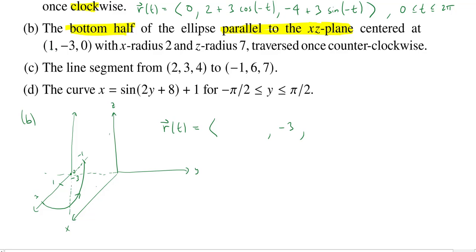So the X coordinate, we get a 1, then plus 2 times cosine of T. And then in the Z direction, there's a 0 here. So we don't have to do any plus here. But the Z radius is 7. So we'll get 7 sine of T.